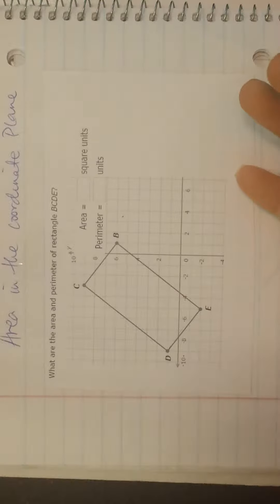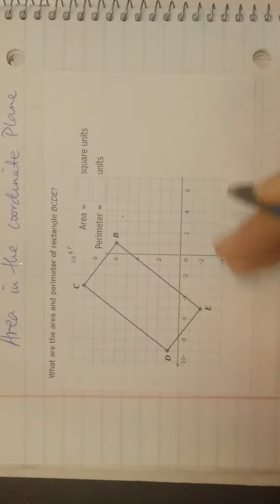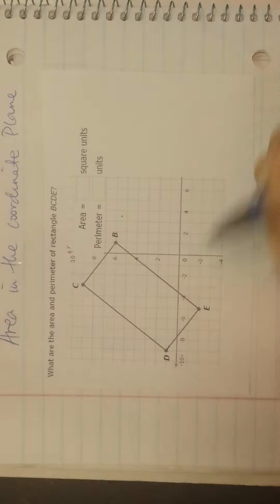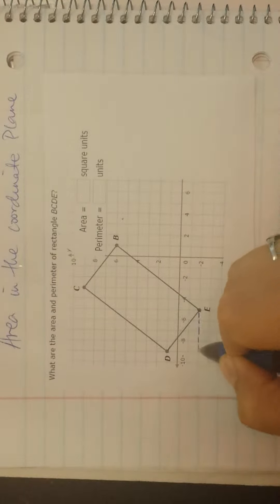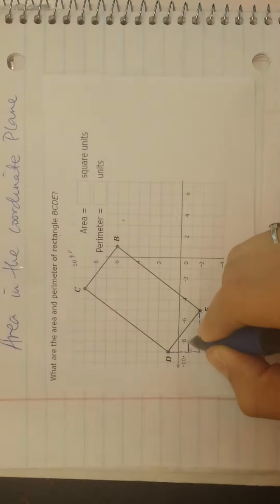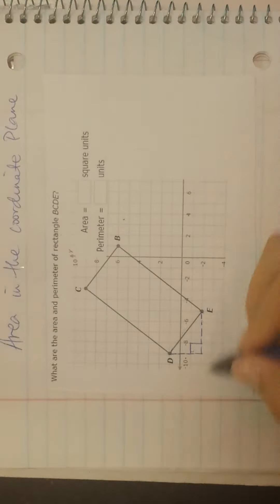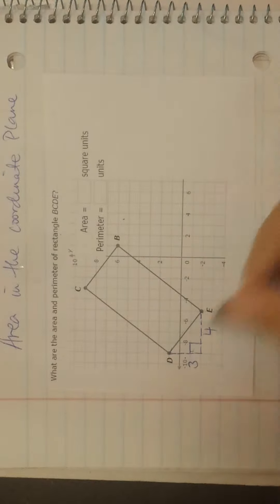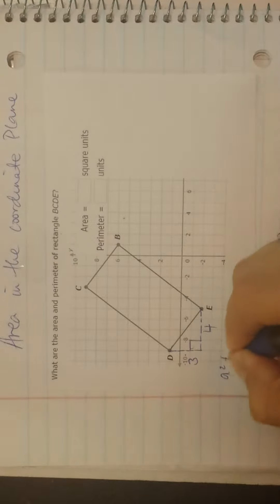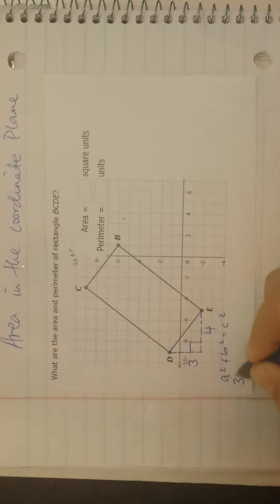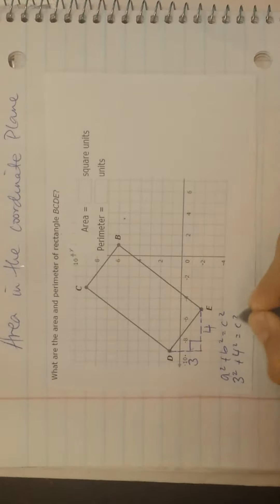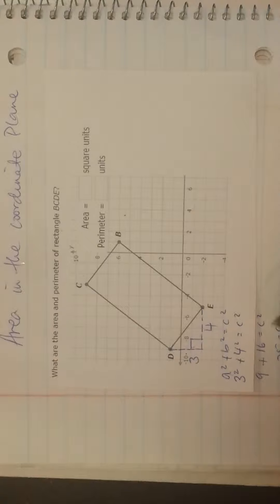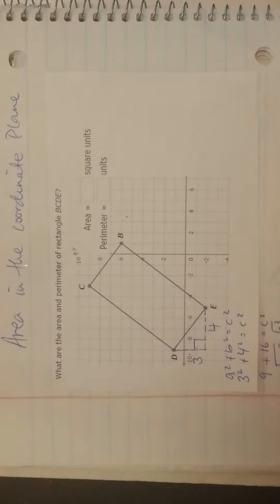To use Pythagorean theorem I need to make 90-degree triangles. To find DE, my base, I'm going to make a 90-degree triangle starting from one point and getting to the other — going left and right, then up and down. This leg is 4 and this one is 3. Pythagorean theorem: A squared plus B squared equals C squared. So 3 squared plus 4 squared equals C squared. 9 plus 16 is 25 equals C squared. Take the square root of both sides — C equals 5.